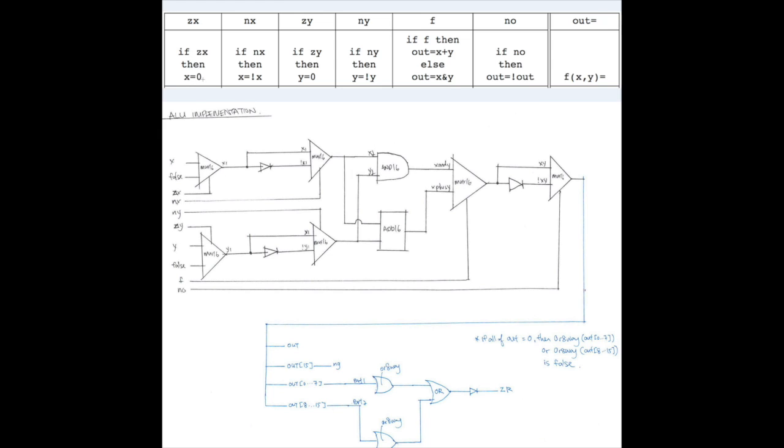And the rest, you know: x equals 0, x is NOT x, y is 0, y is NOT y, and we have the summation of x and y, we have the x and y bitwise AND, and a negation. We can easily implement that using multiplexers again.